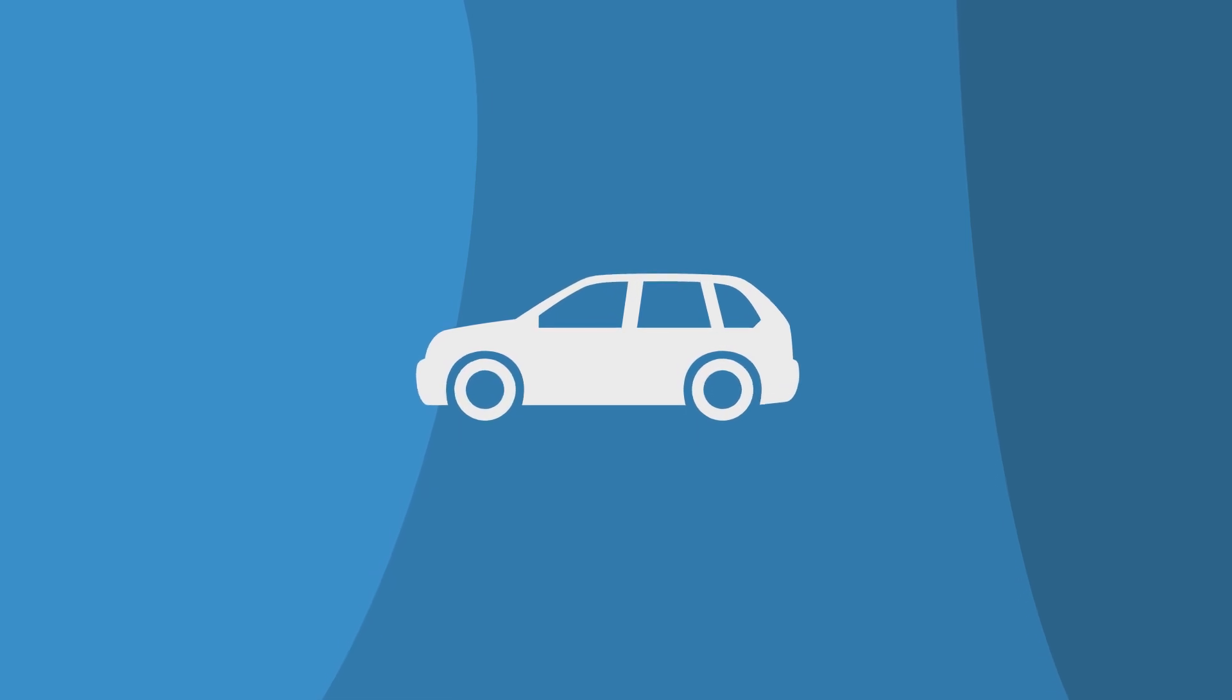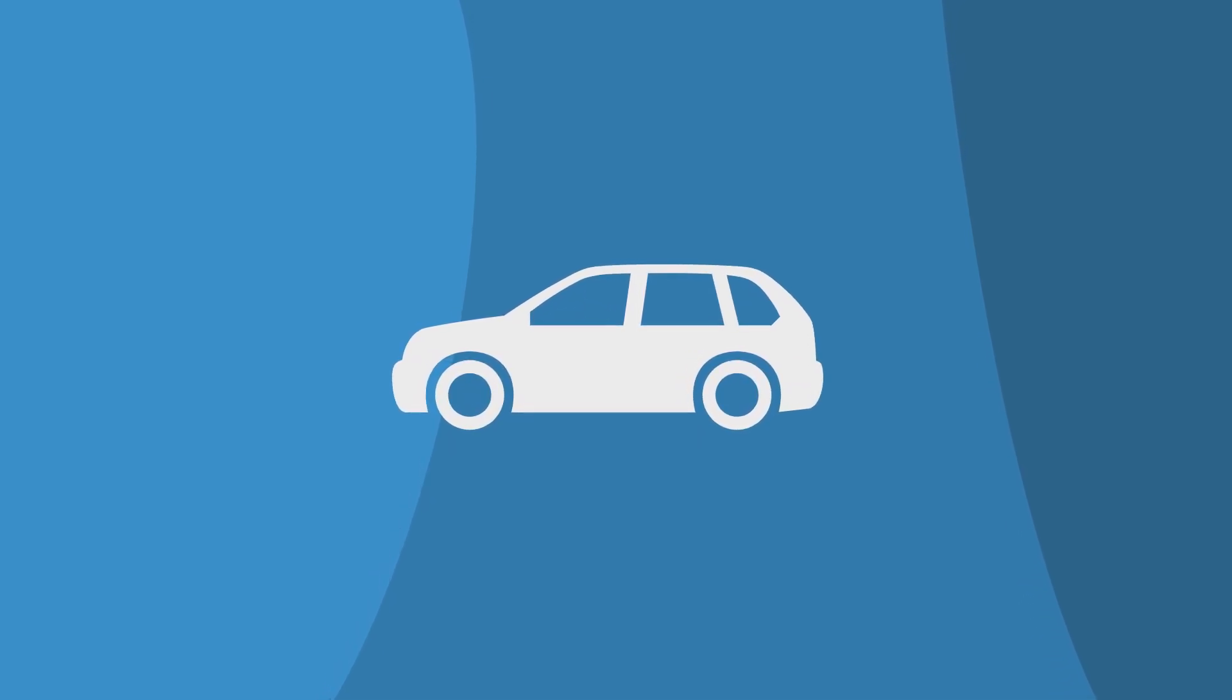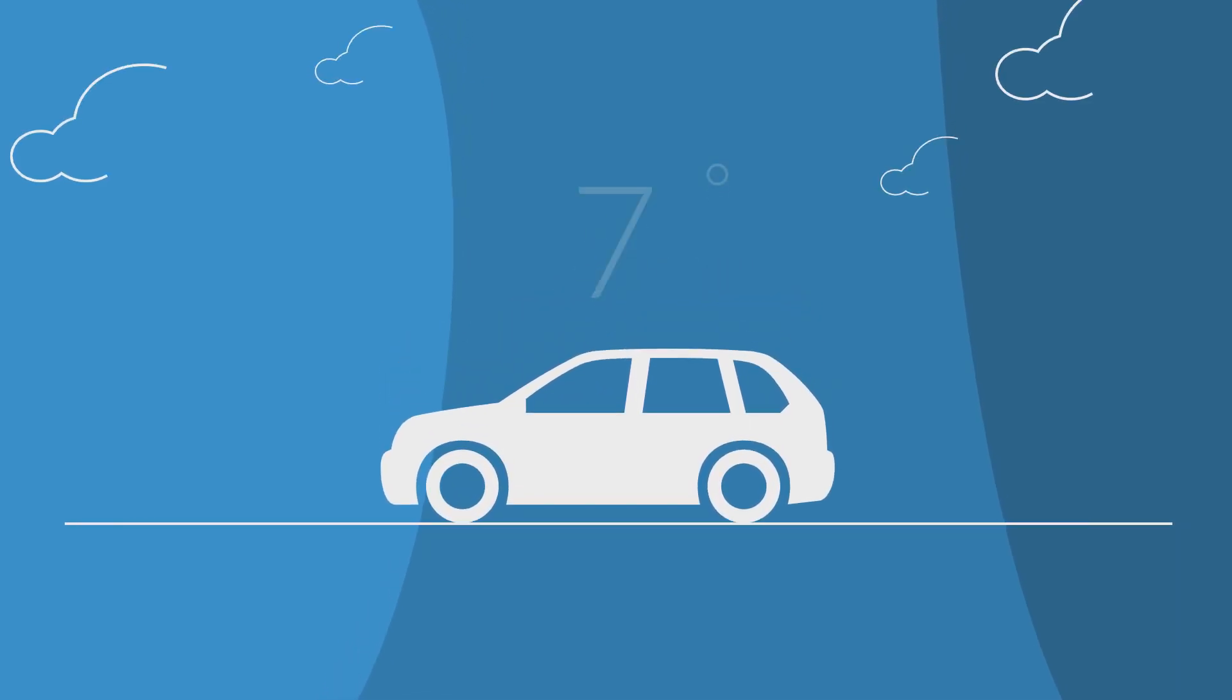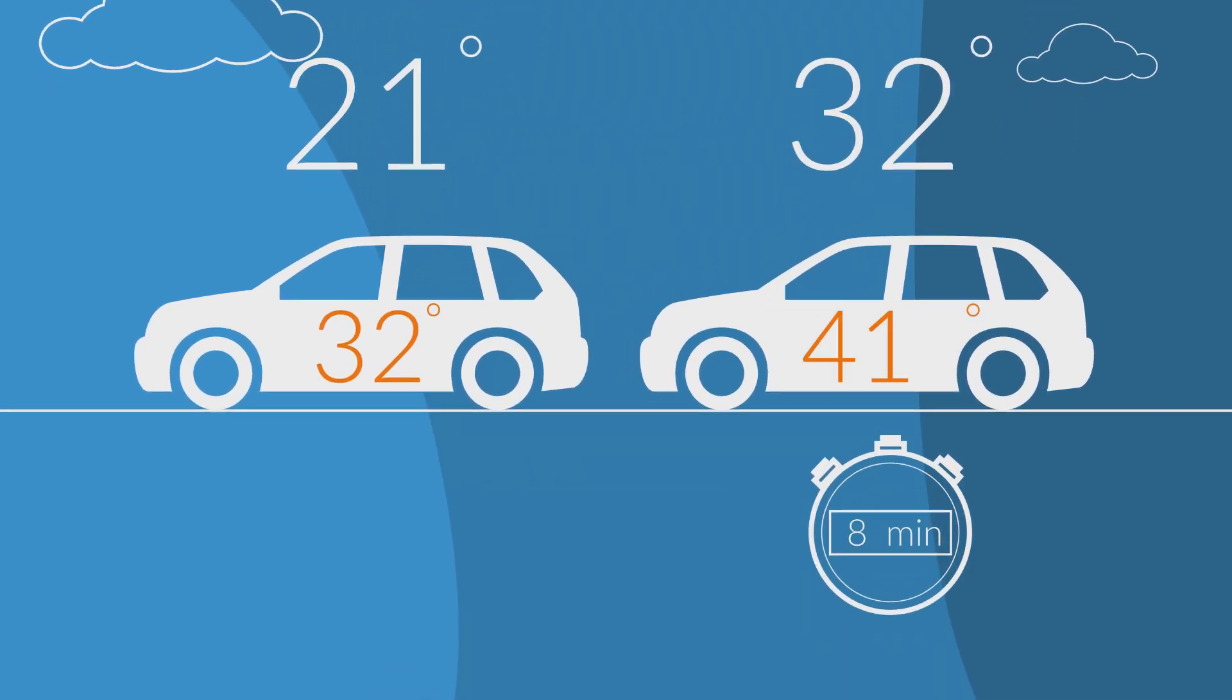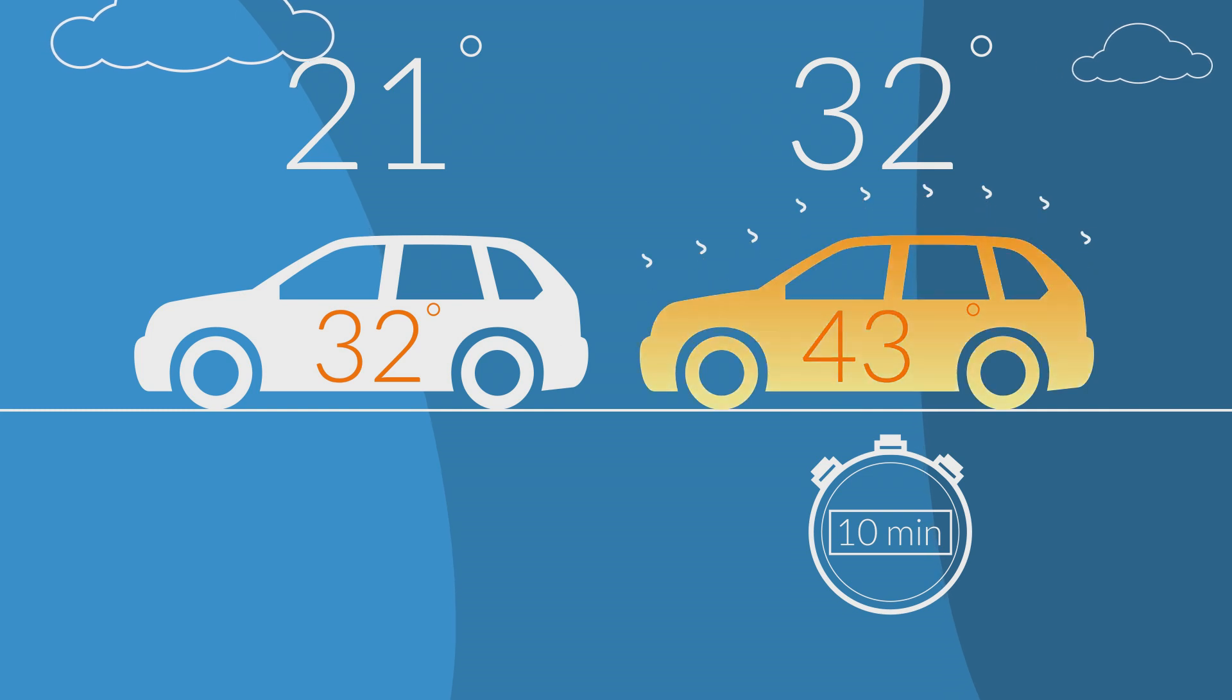Cars are, hands down, the most dangerous place for a pet in the summer. Never leave your pet alone in a parked car in hot or even warm weather. Even with the window cracked, temperatures can rise 10 to 20 degrees in a few short minutes.